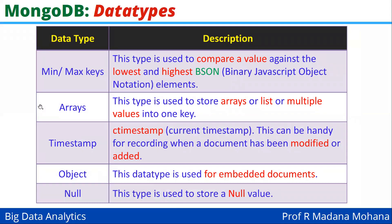The next data type is min and max keys. This is the type used to compare a value against the lowest and highest BSON — that is Binary JavaScript Object Notation — element. Here min stands for minimum, that is the lowest value, and max stands for the highest value in the form of Binary JavaScript Object Notation.